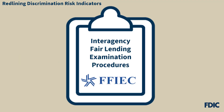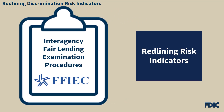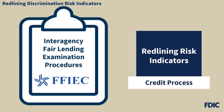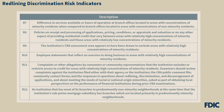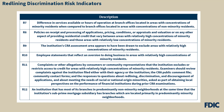Now let's go into specifics about the redlining discrimination risk indicators discussed in the interagency fair lending examination procedures. When examiners perform a fair lending review, they assess whether redlining discrimination risks are present within the bank's credit process. There are 12 redlining risk indicators in the interagency procedures, listed as R1 through R12, where R stands for redlining. These indicators represent areas that may warrant further review to mitigate fair lending risks.